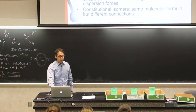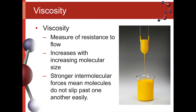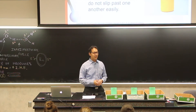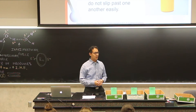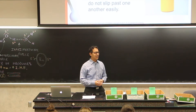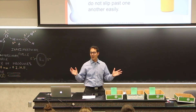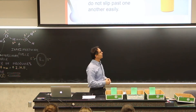This all leads to another property besides boiling point and melting point: viscosity. Viscosity is one of those big words that just means how resistant something is to flow. The way you measure this is really basic — you take a bucket, poke a hole in it, and see how long it takes the stuff to ooze out. That's literally how they measure viscosity.